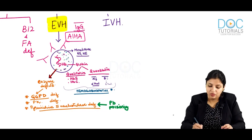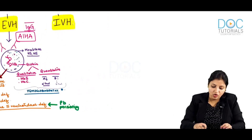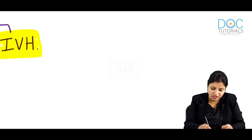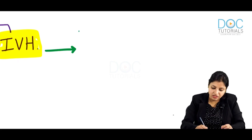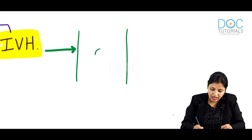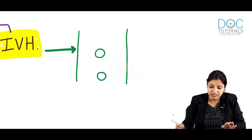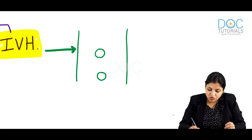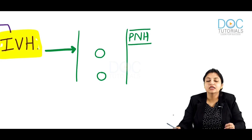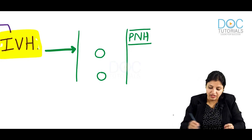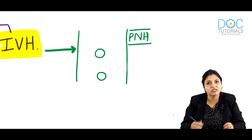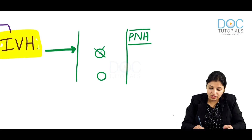Now let us come to intravascular hemolysis — lysis of red cells occurring in the circulation itself. One major cause is complements. We will study later that paroxysmal nocturnal hemoglobinuria (PNH) is a complementopathy, where complements are over-activated and break the red cells in the circulation itself.